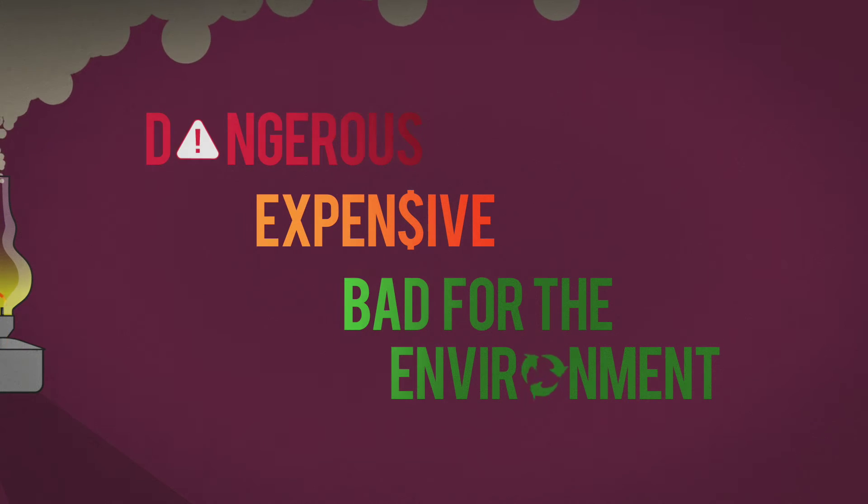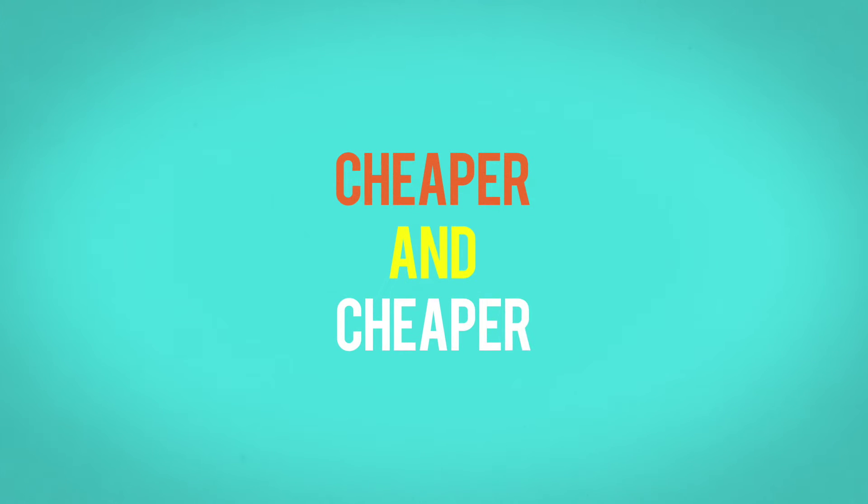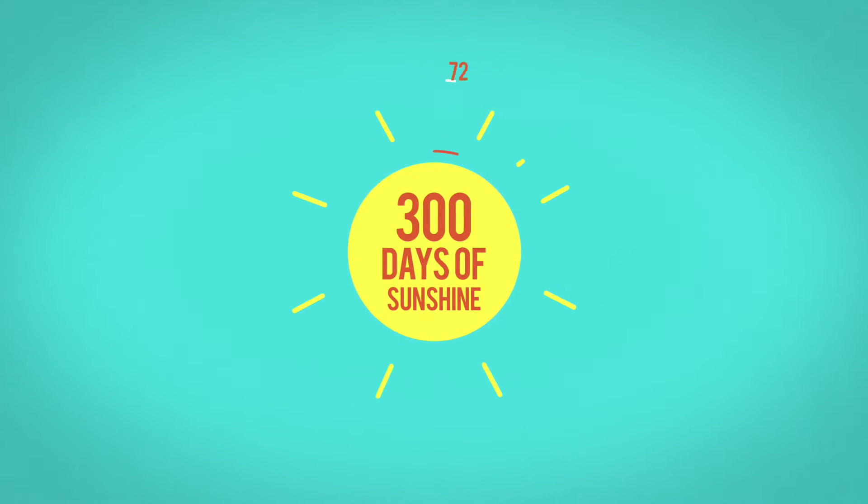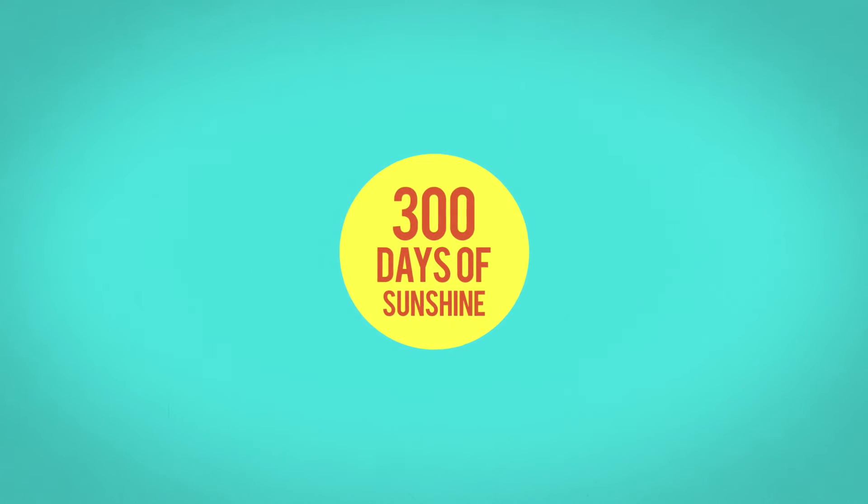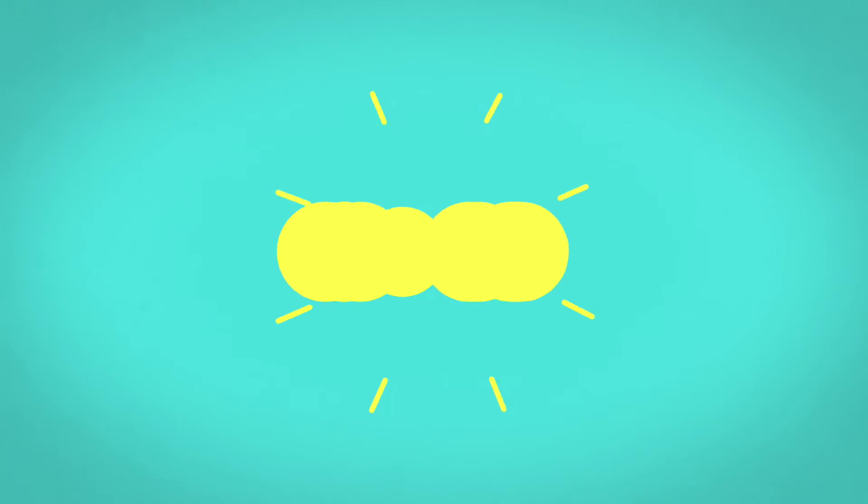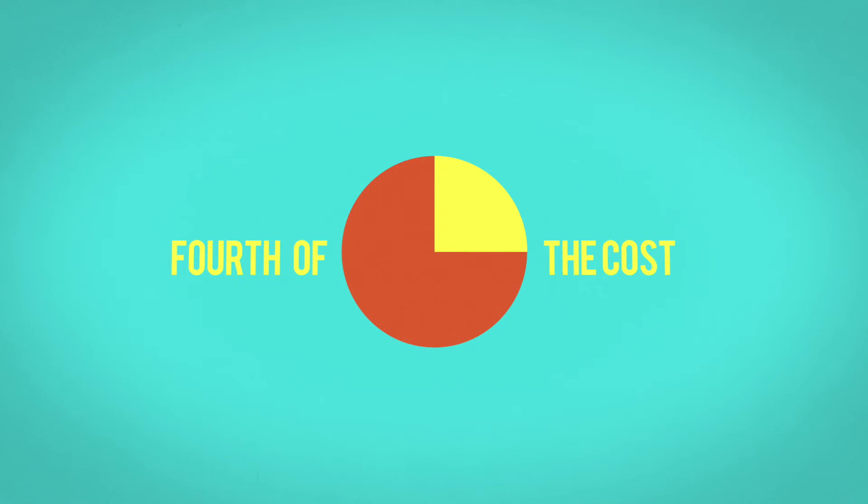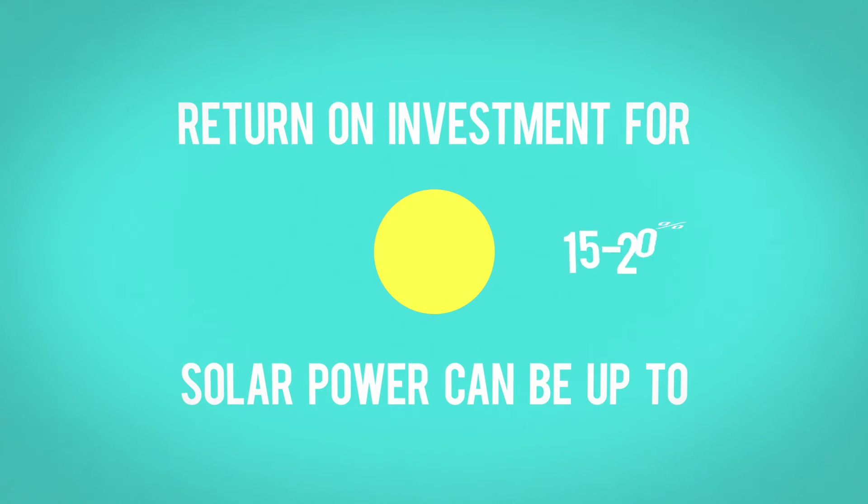But there's a much better energy source available. One that's getting cheaper and cheaper to access. The average 300 days of sunshine we have per year in India makes this the perfect destination for solar energy investment. Solar-powered lighting outshines a kerosene wick lamp ten times over and is less than one-fourth the cost. It's time Neha and her family switched on to clean and cheap electricity.